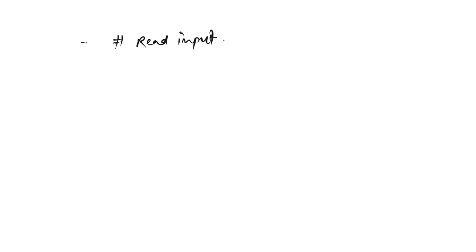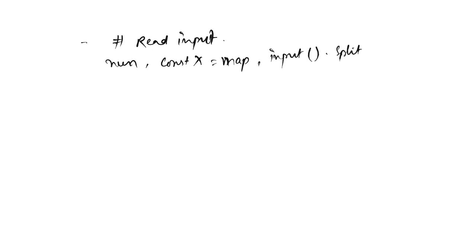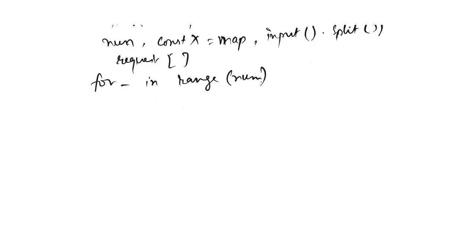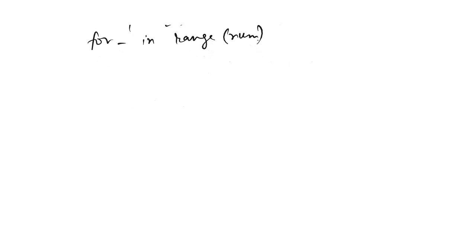Read input. const x, map input dot split. Request for in range num: request time, end time, resource id.